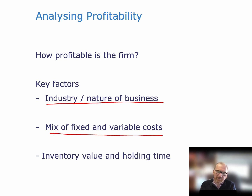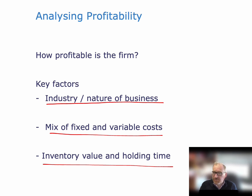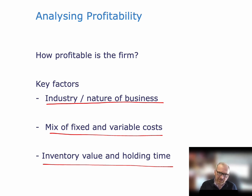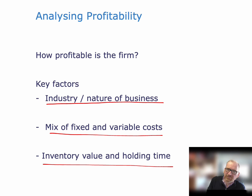Inventory value and holding time also matter. Are we dealing in very valuable goods? A jewelry store that buys in jewelry and might have it on display for two years before selling will expect a much higher gross margin or gross profit percentage on those items than a supermarket that buys milk and expects to sell it within three or four days. Everything depends on the nature of the business, and you really need a comparable company to compare these ratios against — you can't determine what ratios a business should have just by looking at its own accounts.